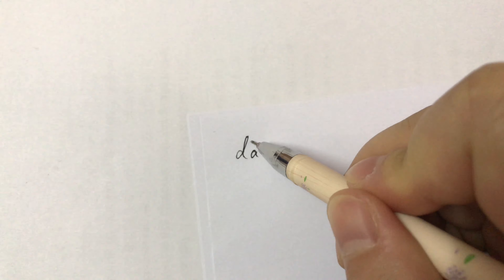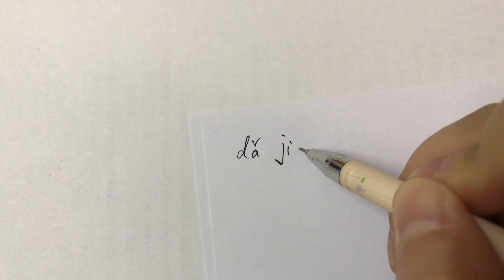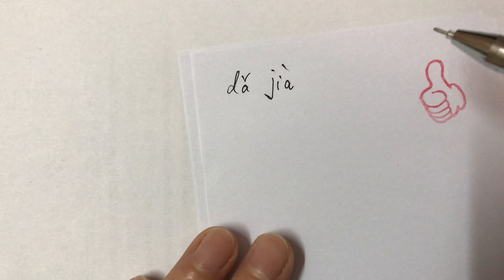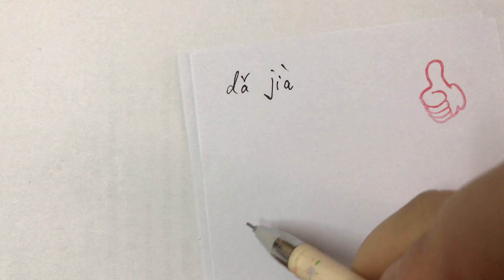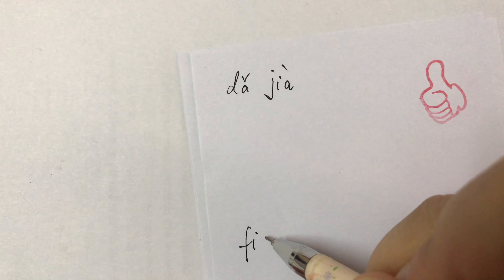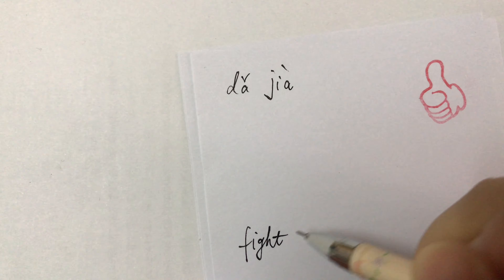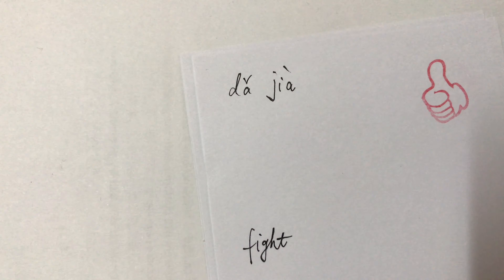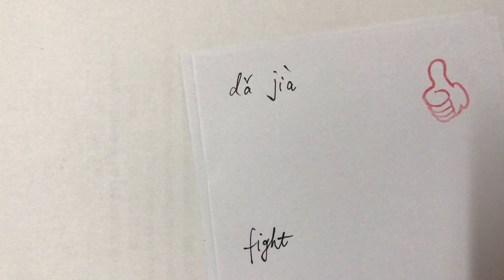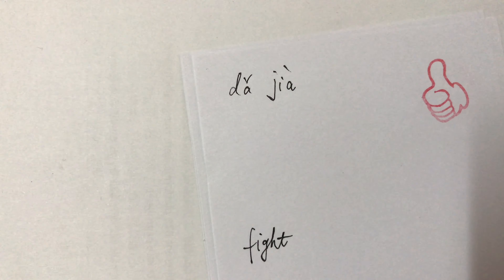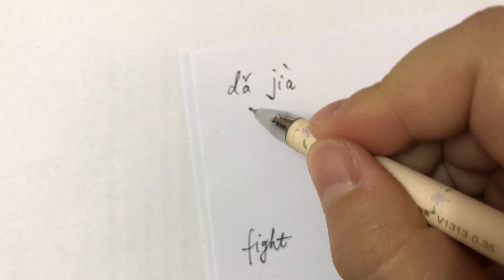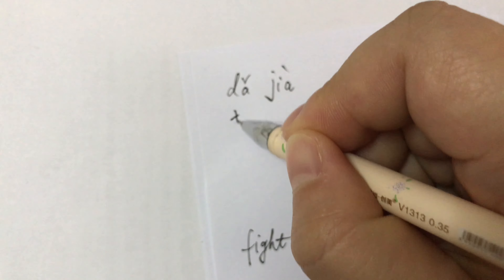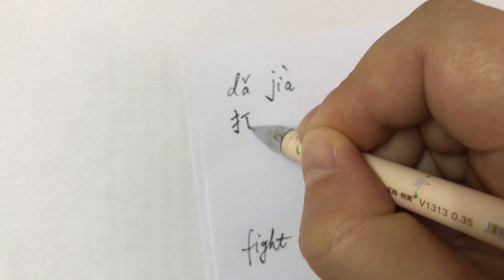The first one for today is 打架. 打架 means 'fight.' For example: 'I will not permit fighting in this classroom.' 我不准有人在这个教室里打架. 打架.